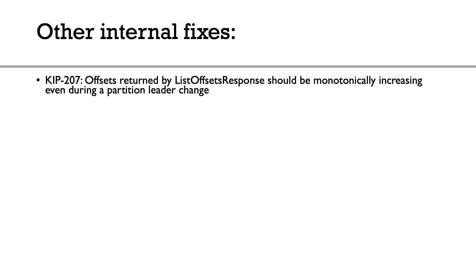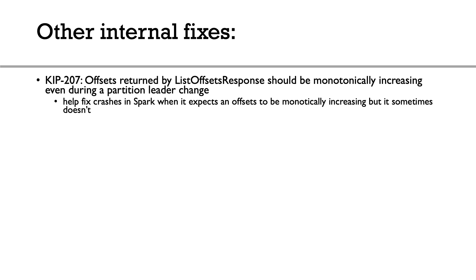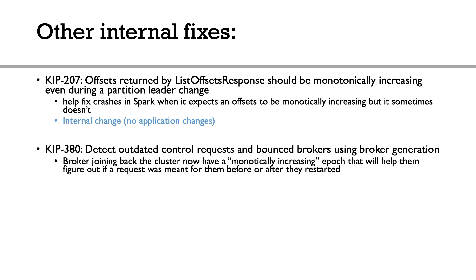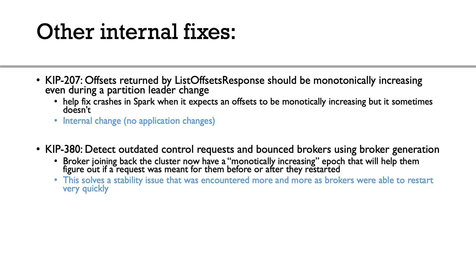Other internal fixes are worth noting. KIP 207 ensures that offsets returned by list offset response are monotonically increasing during partition leader changes — this fixes a crash that was happening in Spark when it expected offsets to be increasing over time. This is an internal change; you don't need to change your applications. Additionally, if a broker was restarting and receiving outdated control requests, it would still process them. Now every time you restart a broker it gets a new epoch number, and requests not meant for that epoch are ignored — making sure brokers can restart without processing stale or outdated requests. Just restart your brokers and you'll get this increased stability.